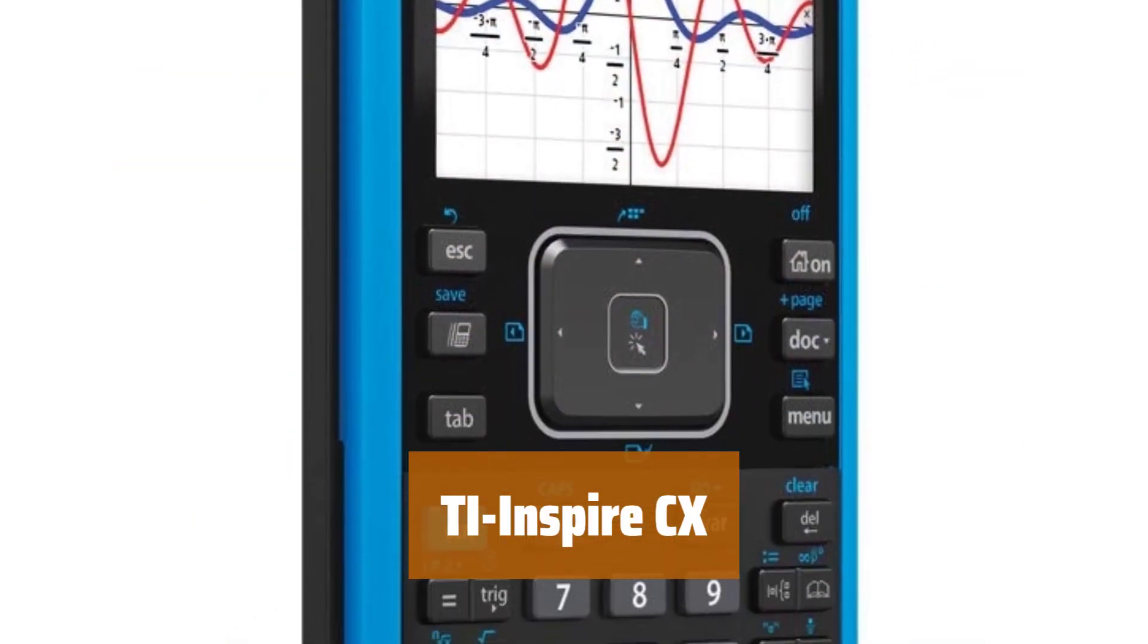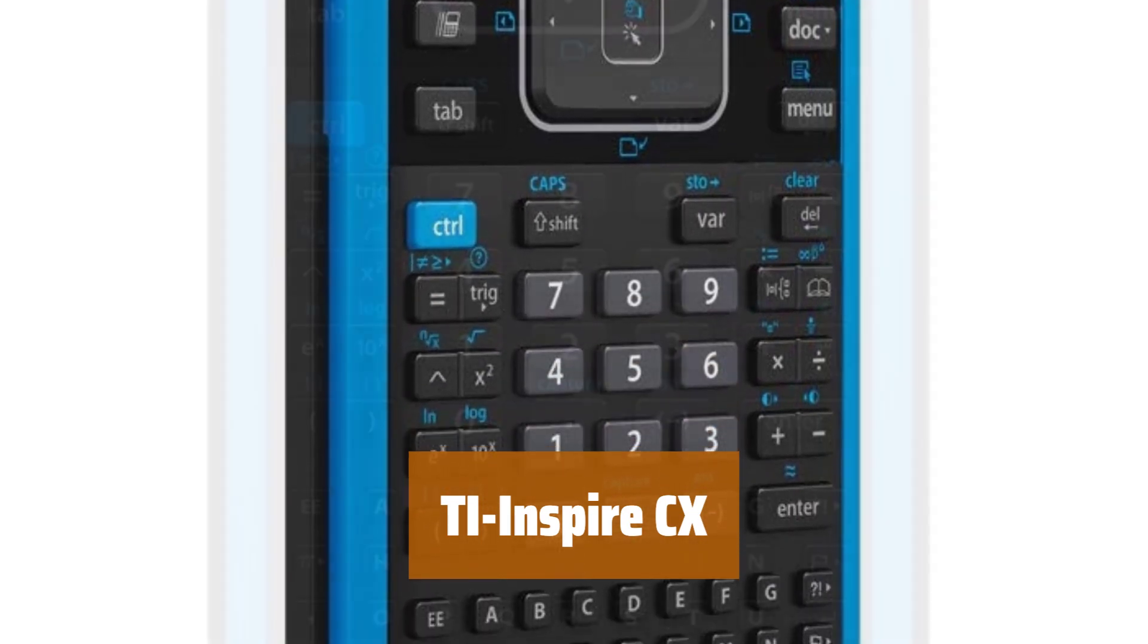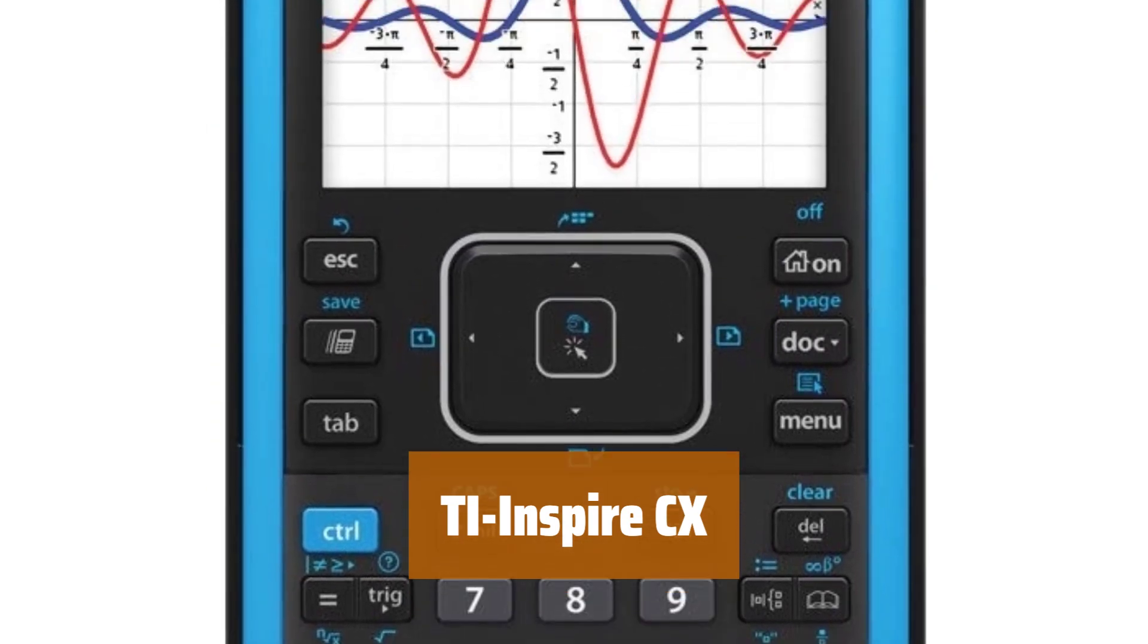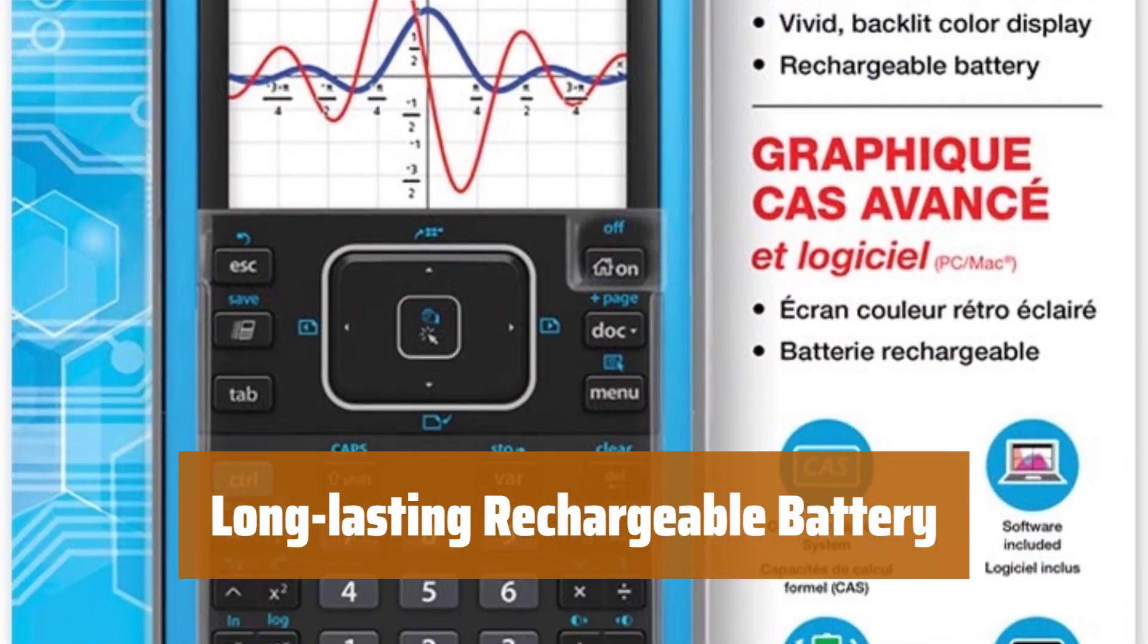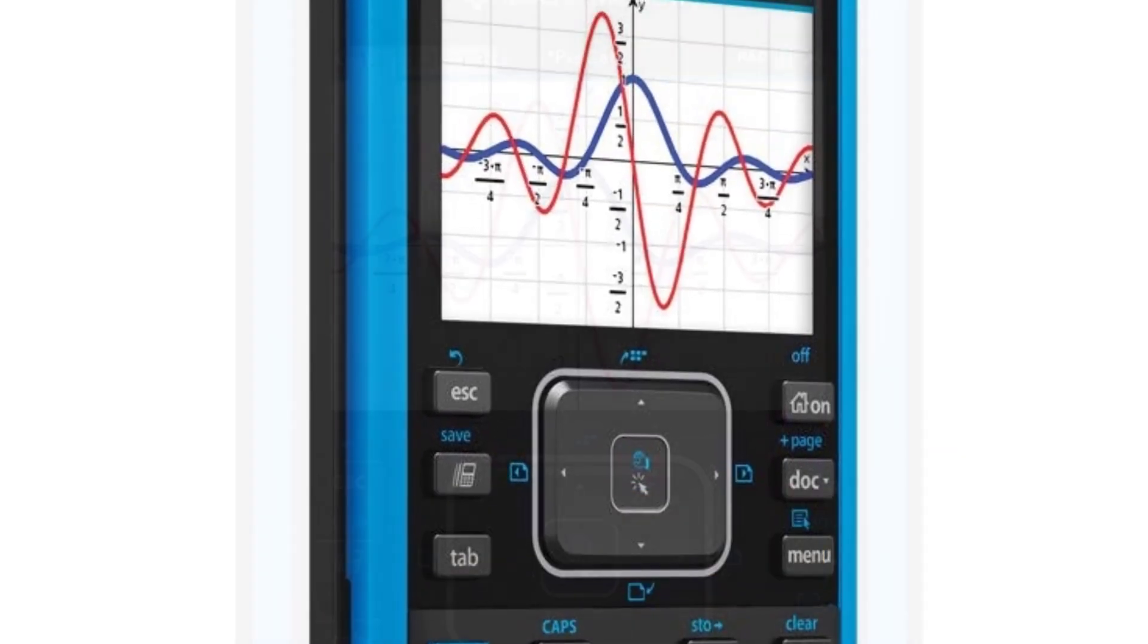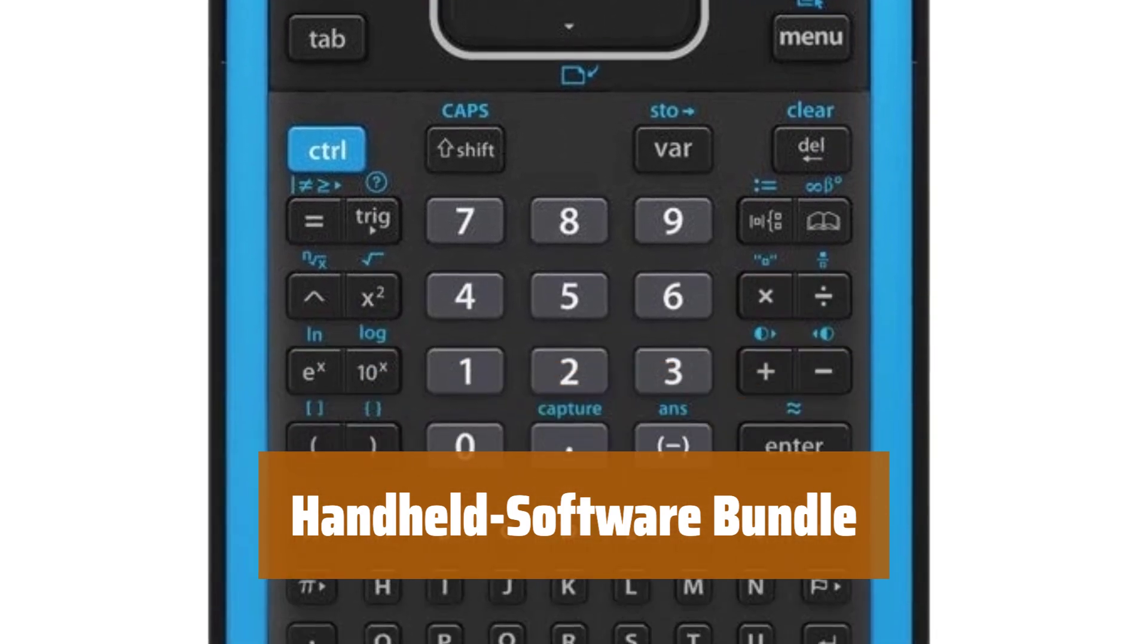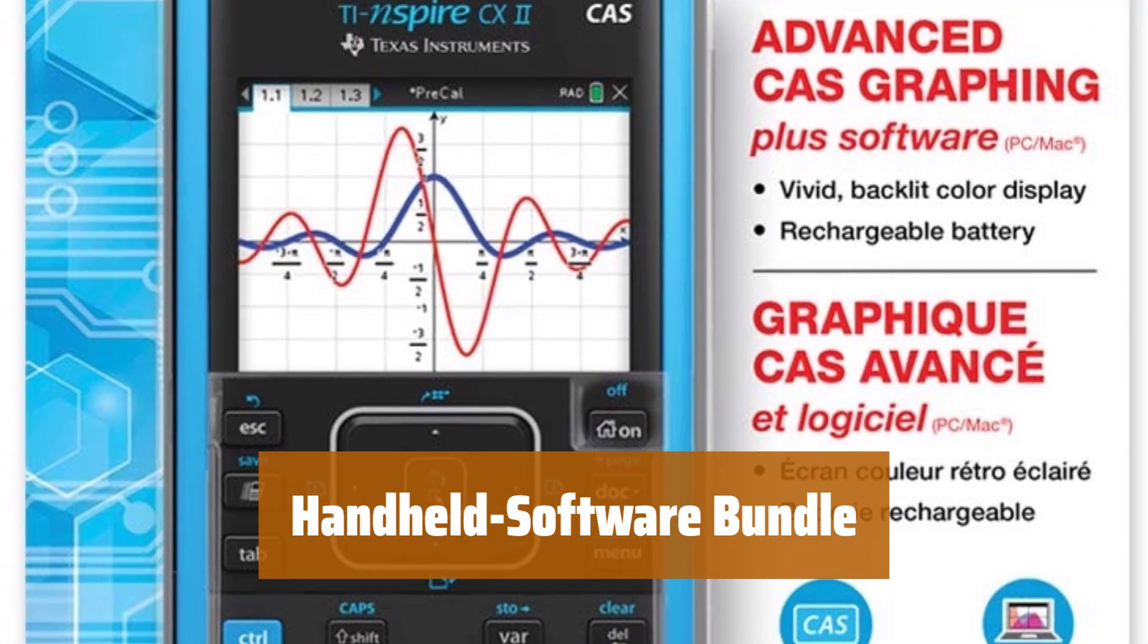Number 1: The screen boasts a 3.5 inch diagonal size with 320 by 240 pixels. It offers 16-bit color and 125 dpi resolution for crisp visuals. With a single charge, the included battery can power the device for up to two weeks. Say goodbye to frequent recharging. Get access to the T-Inspire CX student software in this bundle. It enhances graphing capabilities and adds extra functionality.